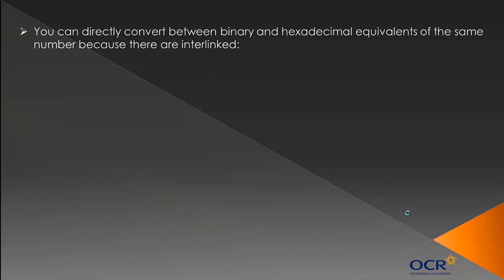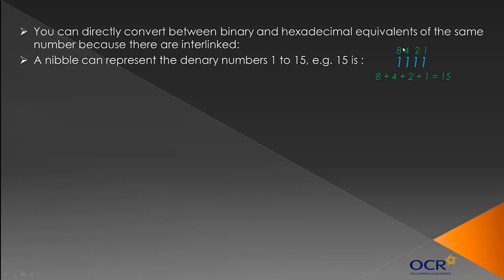Now we've got to look at converting straight between binary and hexadecimal equivalents of the same number. They're interlinked—it's really clever how this works. A nibble can represent the binary numbers 1 to 15. For example, 15 is 1111. Four ones match your nibble. A nibble is 4 bits. These are our headings for binary: 8, 4, 2, 1. We're literally just adding them up: 8 plus 4 plus 2 plus 1 equals 15.